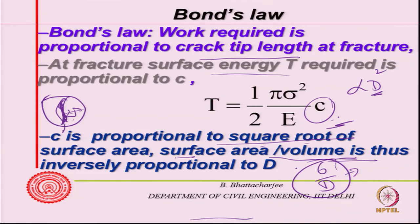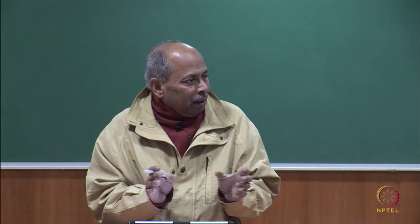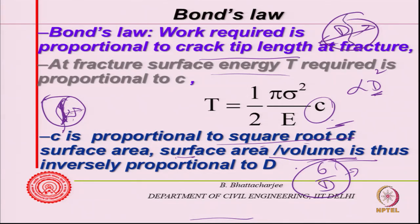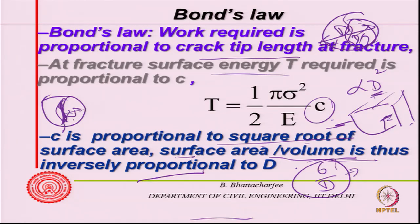If you have a large aggregate breaking into smaller aggregate, you have to create more surfaces. Supposing originally it was D - now you need to make it D/2. If you divide a cube into D/2 pieces, you will get 8 cubes out of this. So when you fracture, you will be creating 8 surfaces, and it is inversely proportional to D - same idea, 6/D.